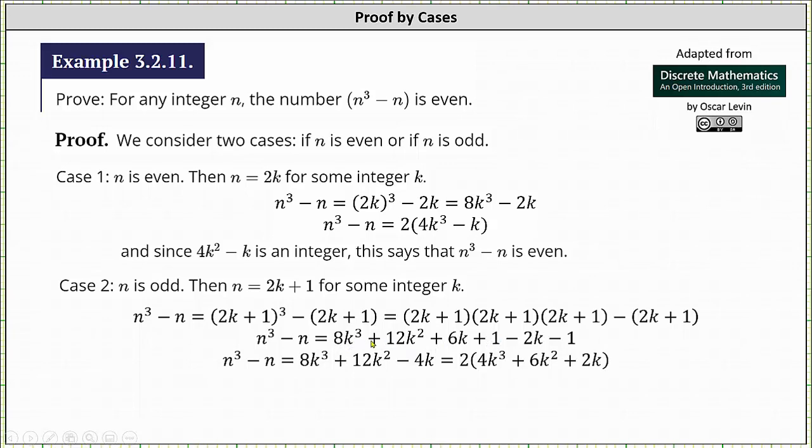Multiplying all this out, we get n³ - n is equal to 8k³ + 12k² + 6k + 1. This is the cube of 2k + 1. And then we have minus 2k - 1 when we subtract the quantity 2k + 1. Combining like terms, we have n³ - n is equal to 8k³ + 12k² - 4k. Notice there is a common factor of 2. We can write n³ - n as 2 times the quantity 4k³ + 6k² + 2k.